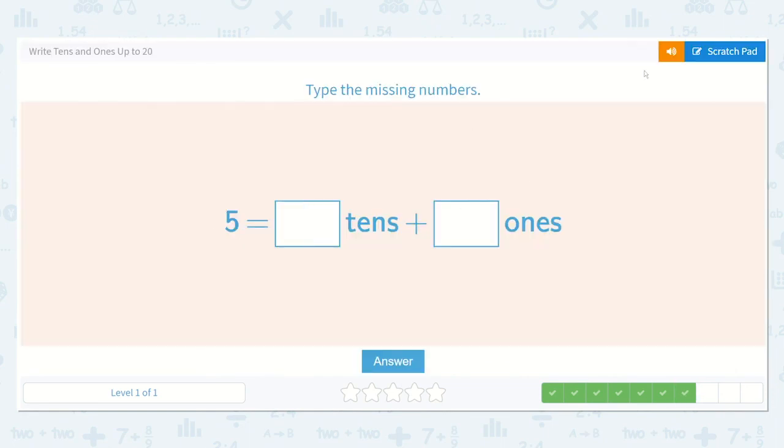Okay, with this problem we see the number 5. We have our ones place here and over here we would have the tens place. Do we have anything in the tens place? Nope. So it's a 0. And then in the ones place we have our 5. 0 tens plus 5 ones.